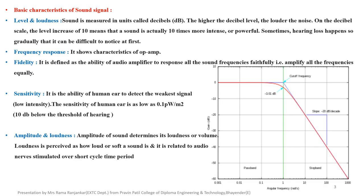These are the basic characteristics of sound signal. Level and Loudness: sound is measured in units called decibels. Higher the decibel level, louder the noise. On the decibel scale, a level increase of 10 means that sound is actually 10 times more intense or powerful.